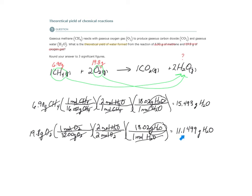Which one of these two amounts is the least amount of water? This one. So that means that oxygen is our limiting reactant. It's going to limit how much product we can make in this reaction. Methane is our excess. Oxygen is our limiting reactant.